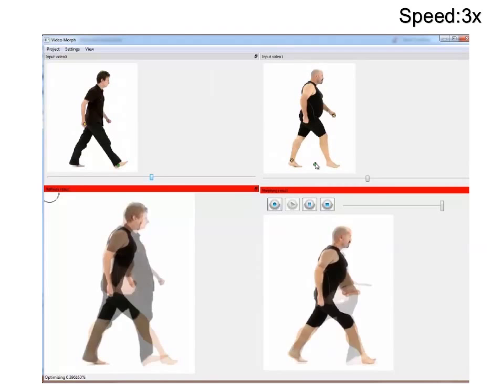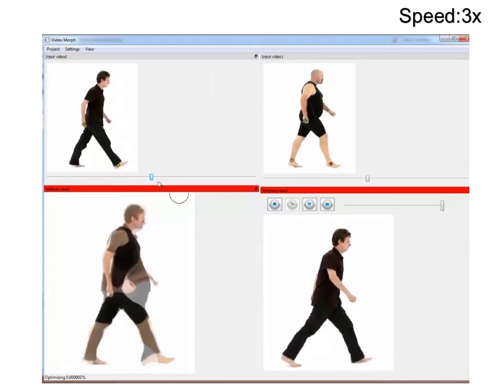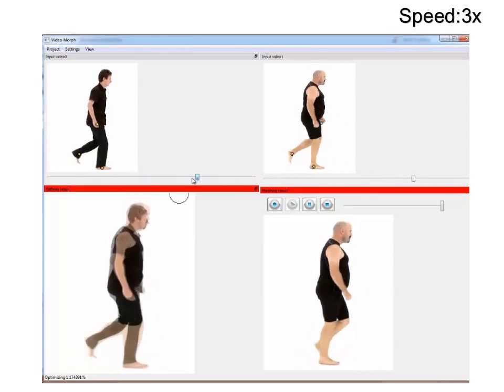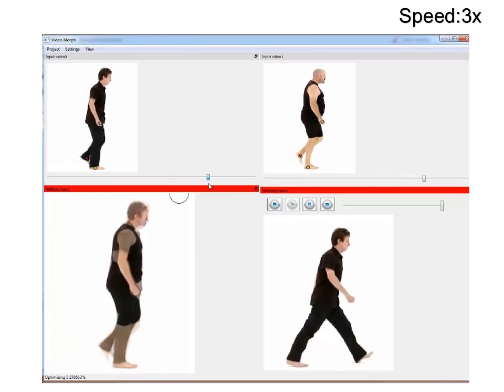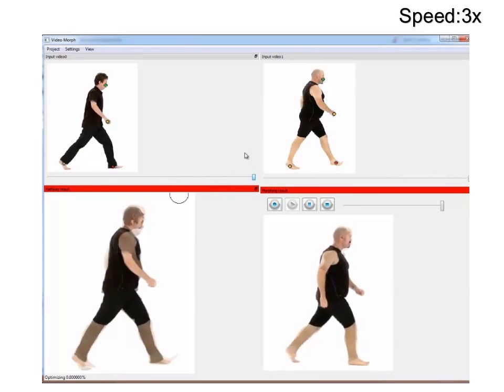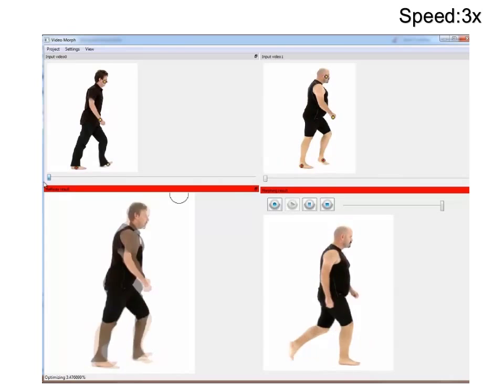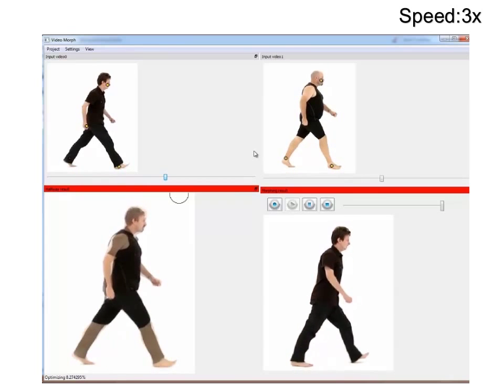During the spatial optimization stage, the user can add and adjust additional control points in order to bring all of the desired features into alignment. Note that all correspondence points used in stage one are carried over to the synchronized videos and used as a starting point for stage two.